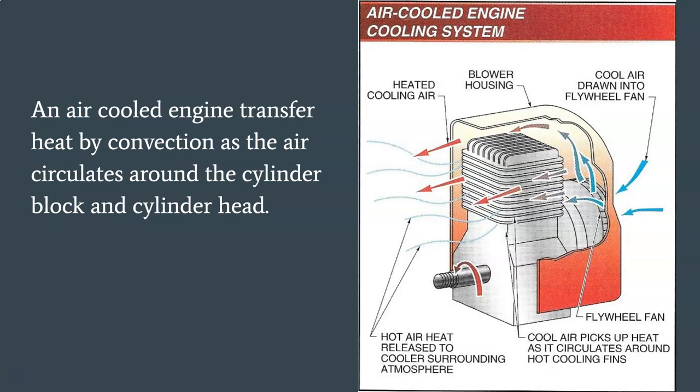An air-cooled engine transfers heat by convection as air circulates around the cylinder block and cylinder head. The engine block transfers its heat by conduction. As cooling air passes the engine block and components, it picks up heat and the atoms and molecules in the air begin to move faster; when the air enters the atmosphere, it releases the heat. Heat is also removed from the engine by exhaust gases, radiant heat emitted from engine components, and the lubrication system.